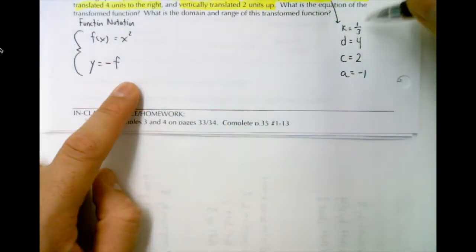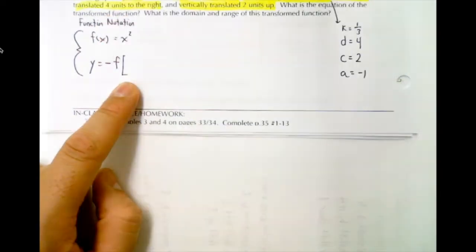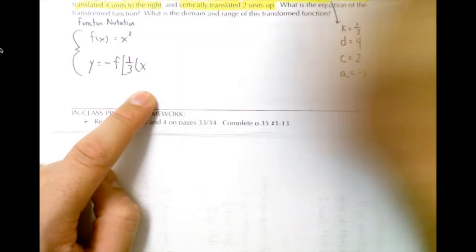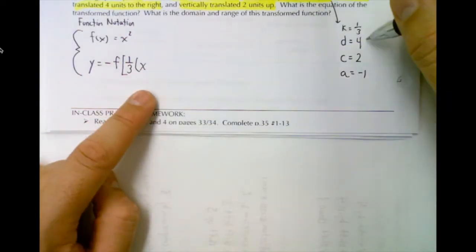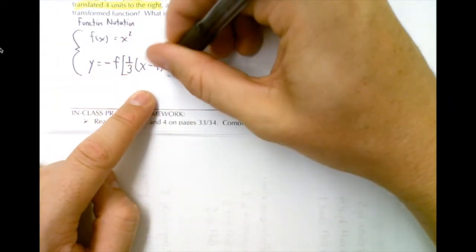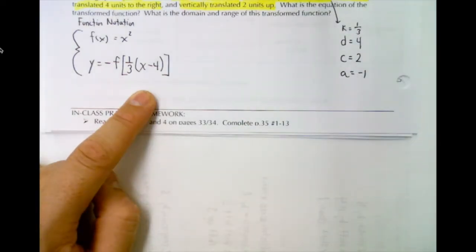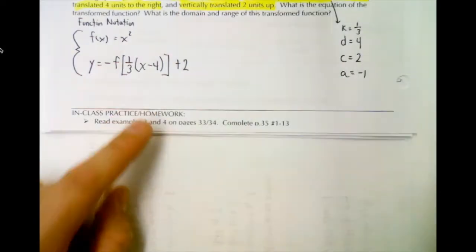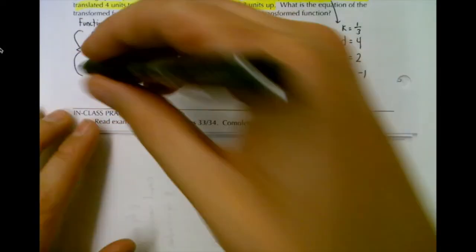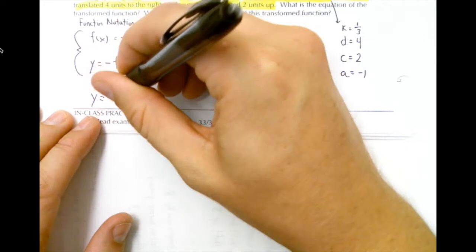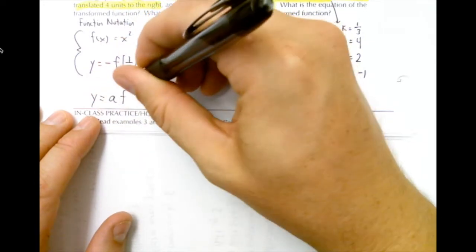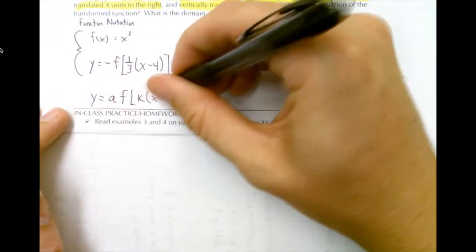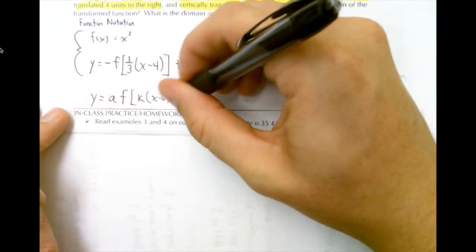And then in our brackets we do have a k and a d. So in square brackets k would go first: one third x, and then it's minus d. d is four so it's minus four, and plus c, and c is two so it's plus two. If you forget where this comes from, it comes from the transformation equation structure that looks like a times f, and then inside the function we have k times x minus d plus c.